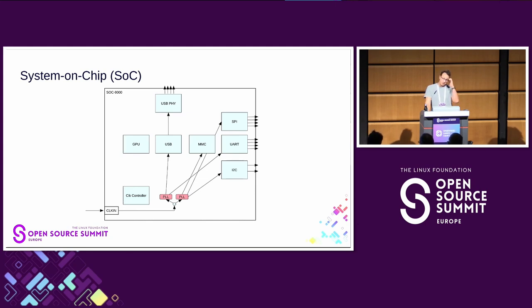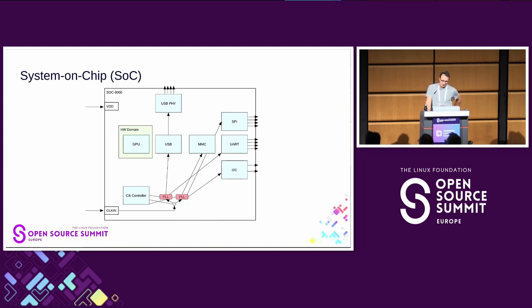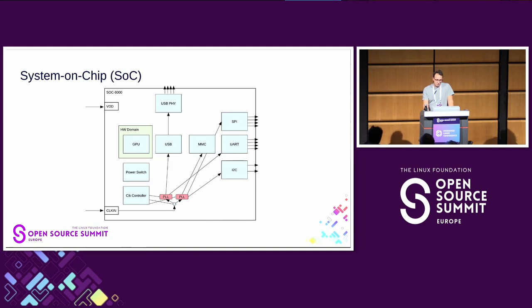You need a clock controller so you can actually control these PLLs, so you put a clock controller device inside your SOC. It's going to have direct connections to the PLLs and some gates. Then you might have some voltage supply coming into the SOC, and you may put a hardware power domain around your GPU just so you can save power — so the GPU can be turned off completely. To do that, you might implement a power controller device in your SOC.